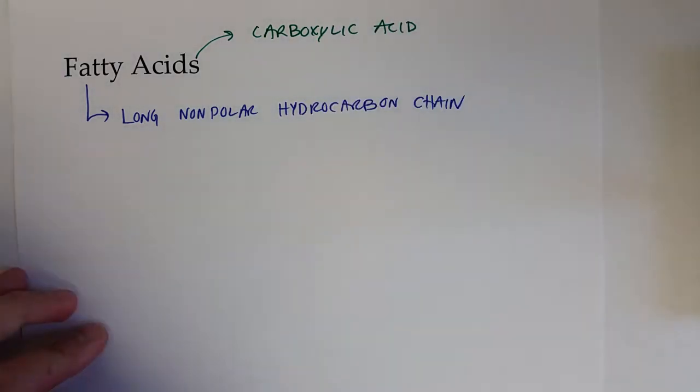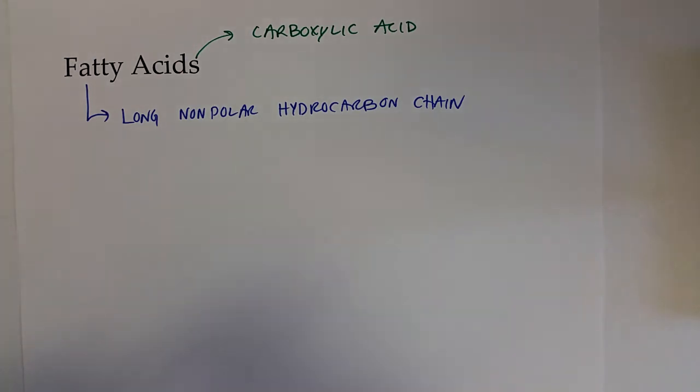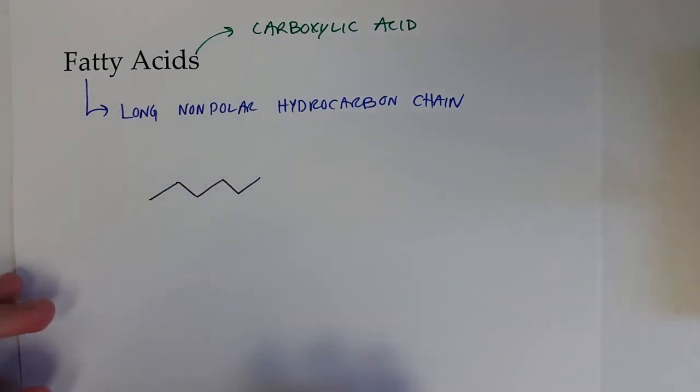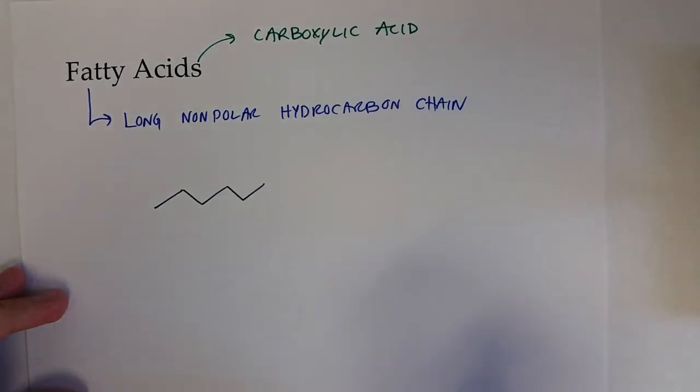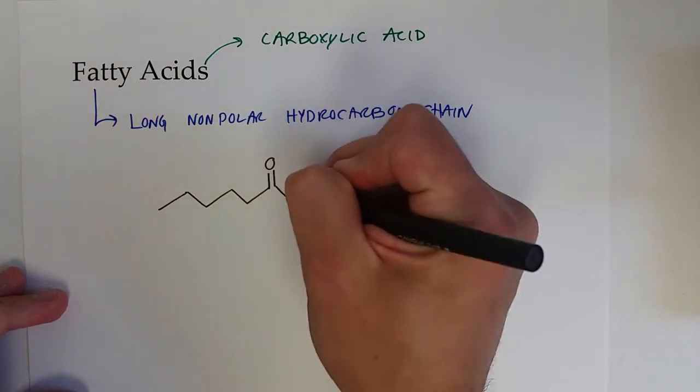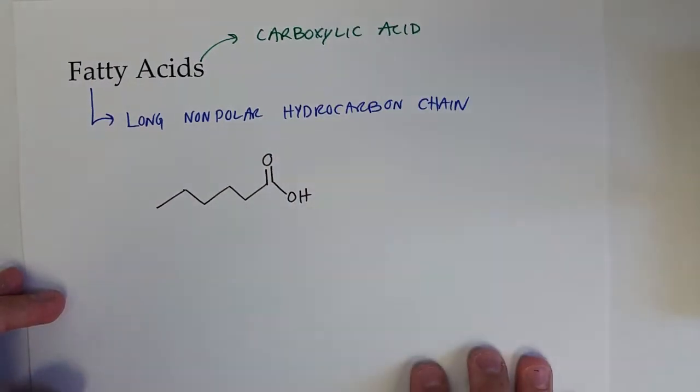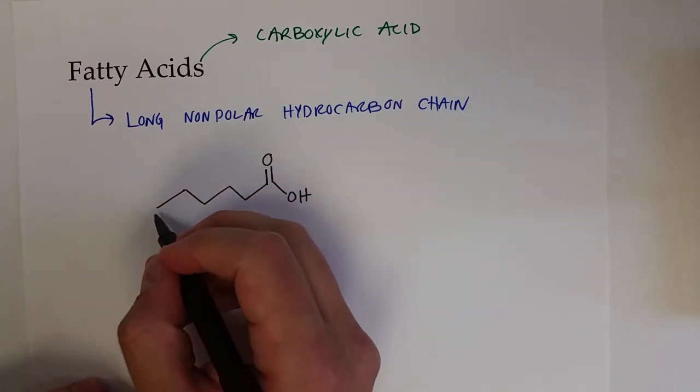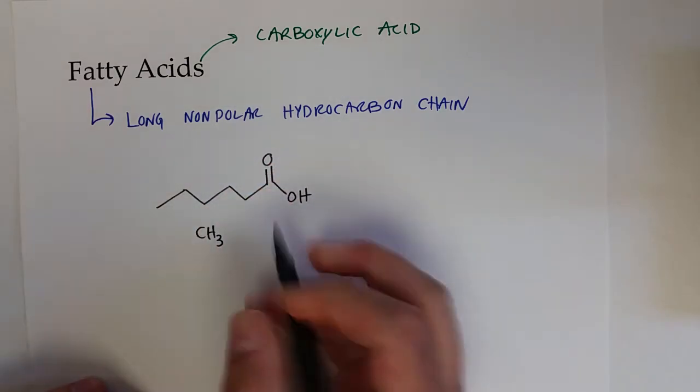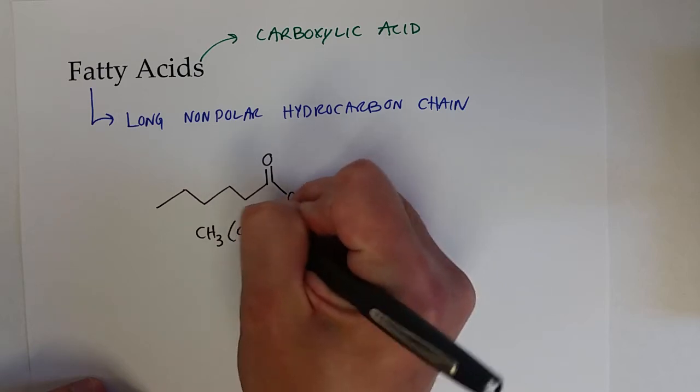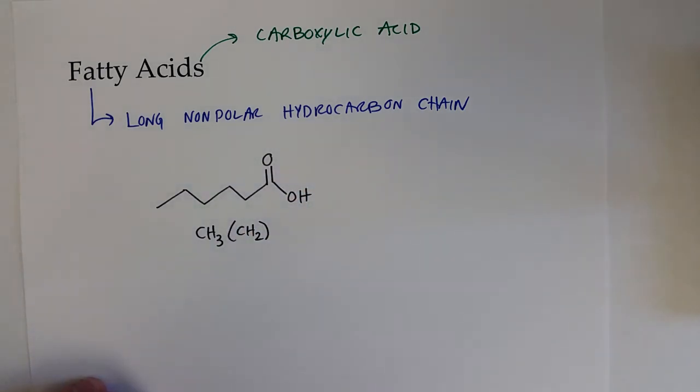So if we wanted to draw one of these, all we would have to do is draw a non-polar carbon chain and then end the molecule with a carboxylic acid functional group. And of course, we can come up with the structure of this fatty acid. It has a CH3 group, and then 1, 2, 3, 4, 4 CH2 in the middle.